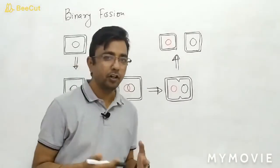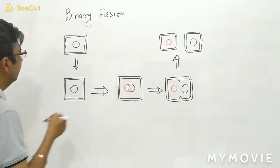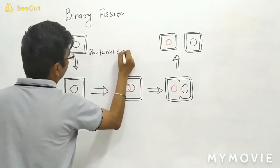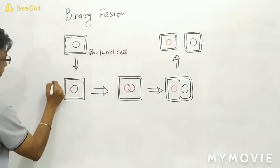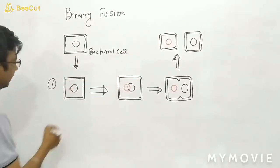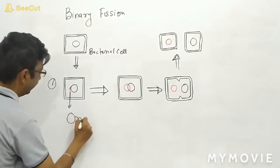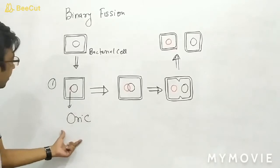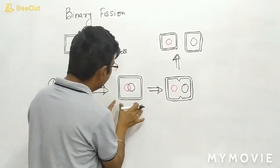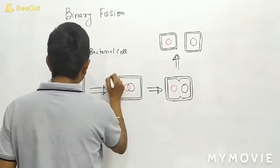In binary fission, I have drawn a simple diagram to understand the process. Here you can see one bacterial cell. In the first step, the DNA of this bacteria starts replicating from a specific region called the origin of replication. Once this replication starts, it forms a new copy of DNA. Replication is completed in the second step.